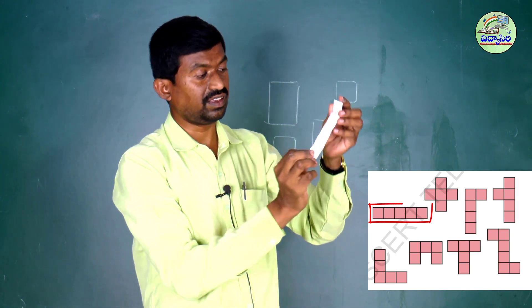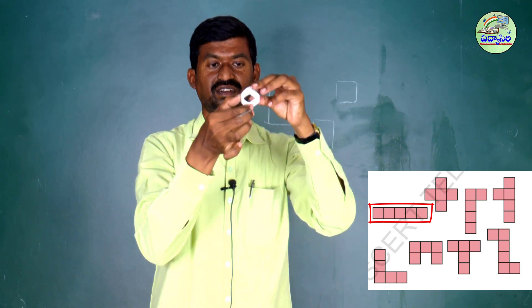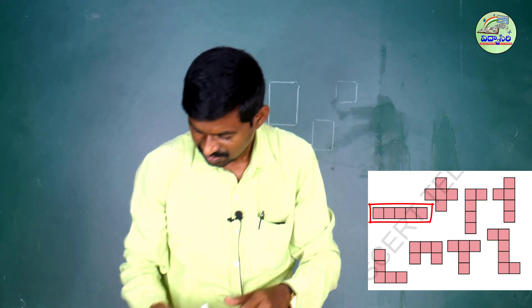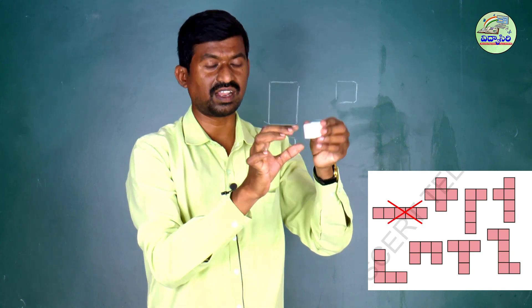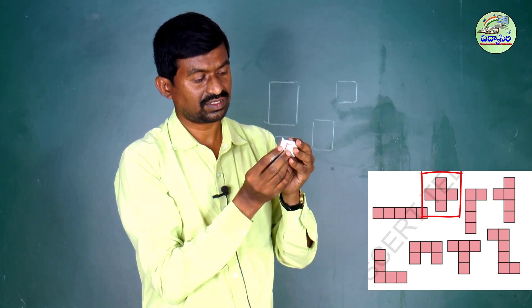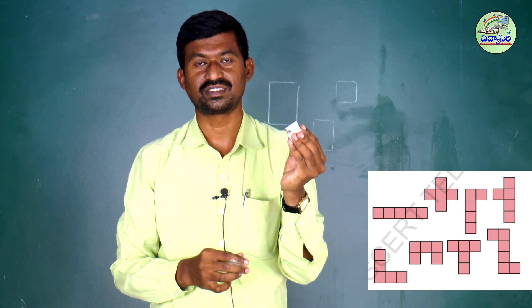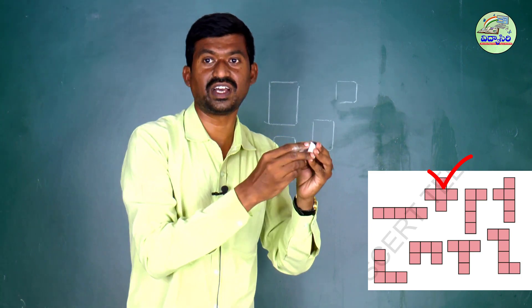Each of the following nets can be used to make this box. I am folding like this. This is an open box — this first one is not making it. Second one — see this net. I am closing like this. Children, this is making an open box. This is the correct net of the open box.